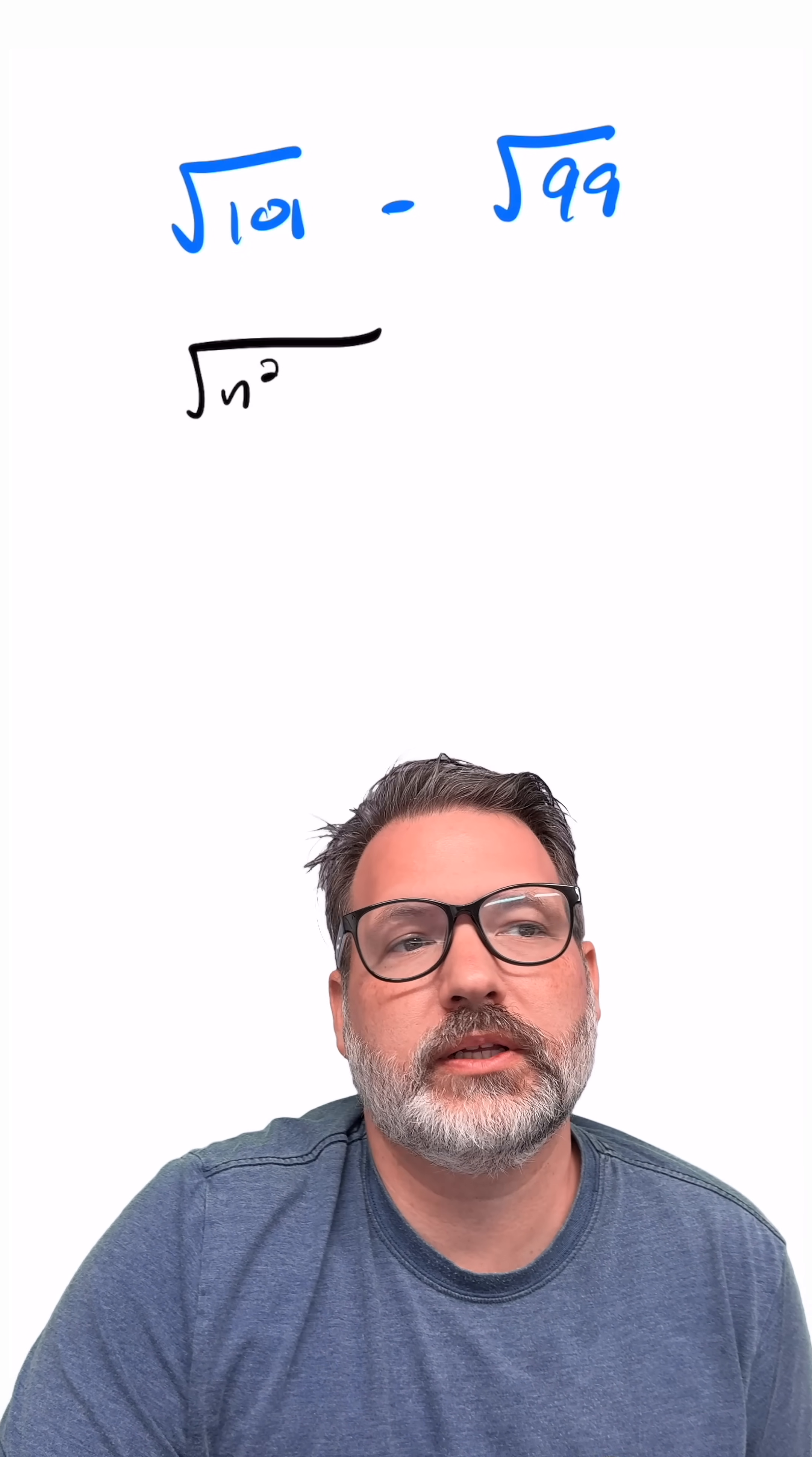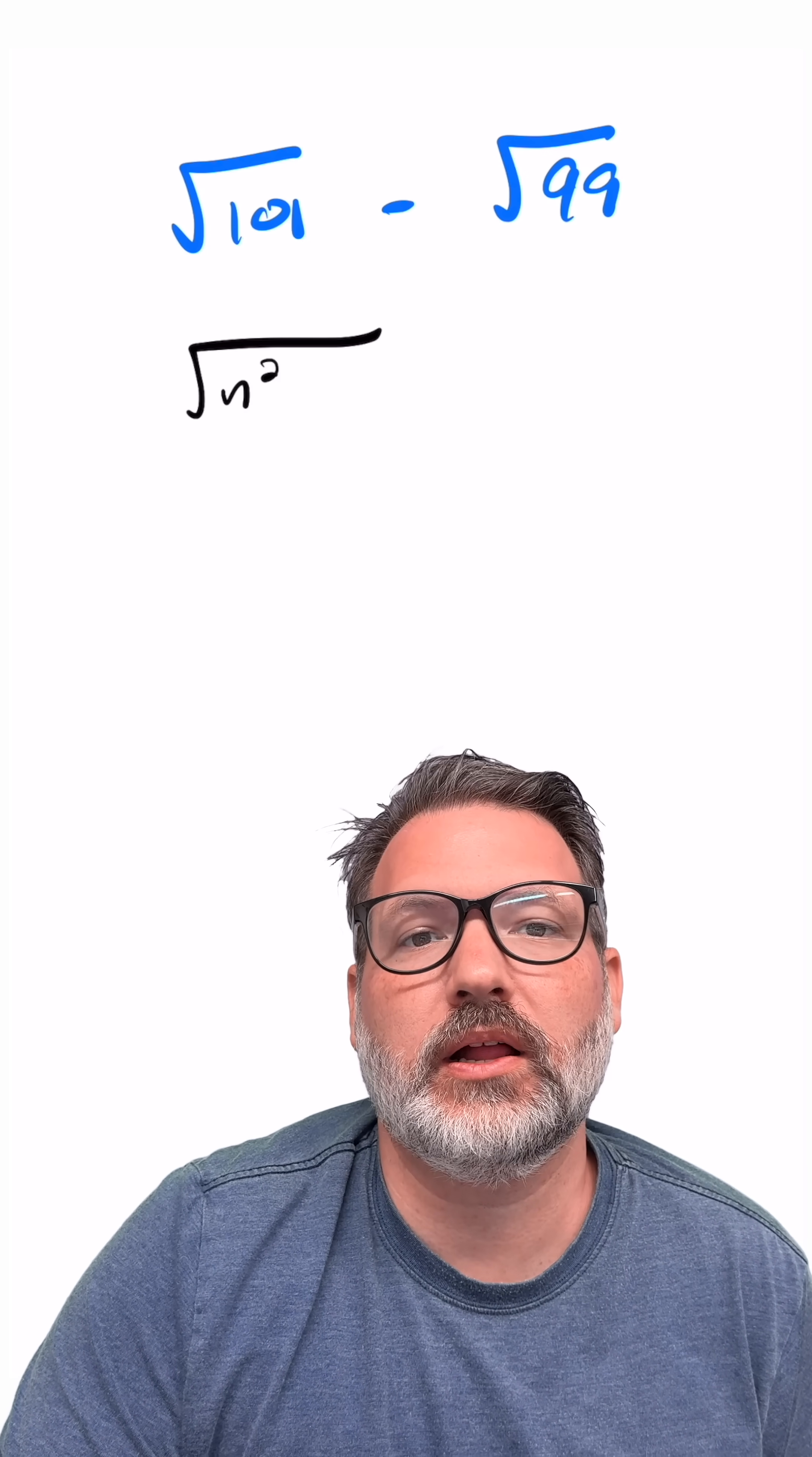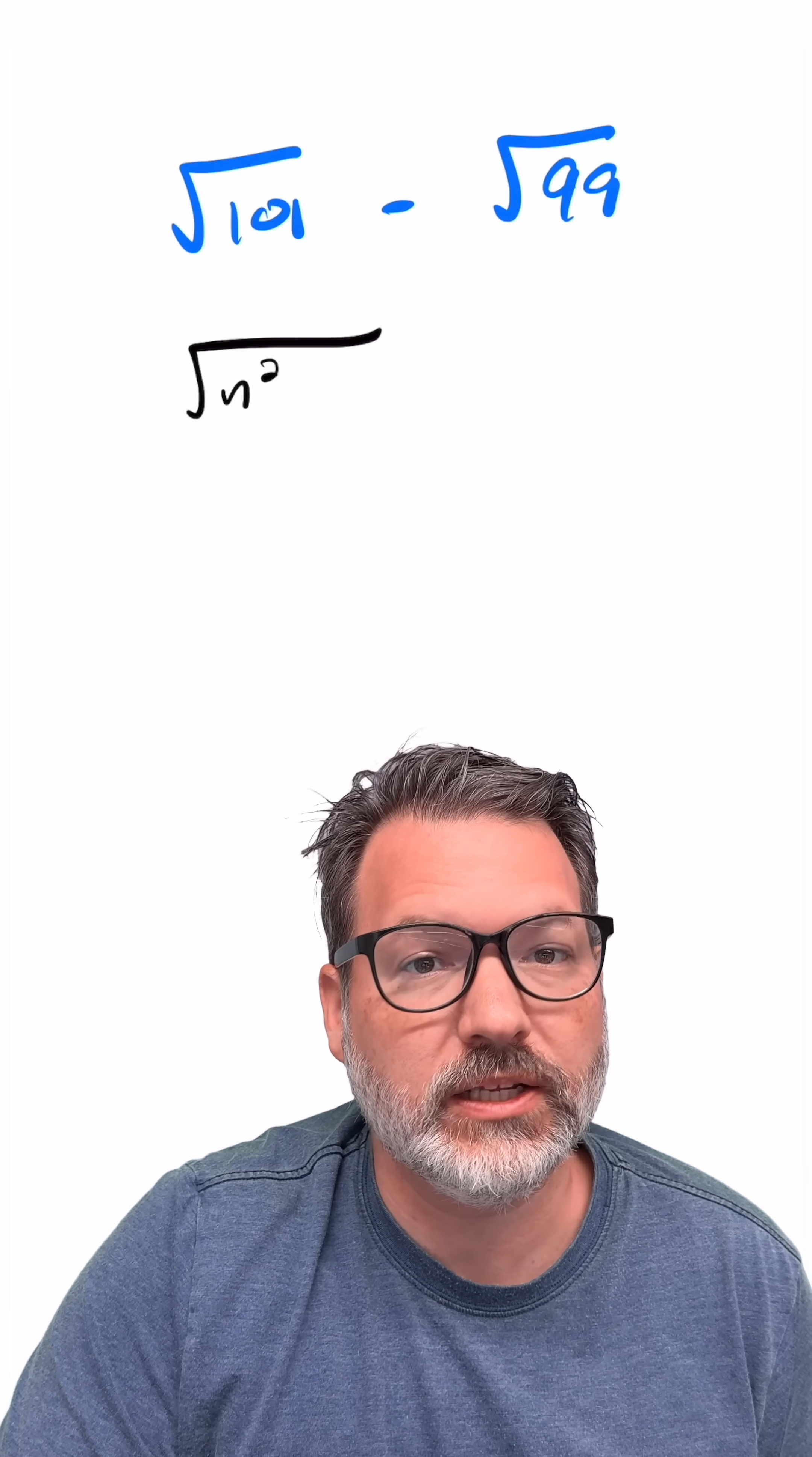If we have some perfect square, we're going to say we have the square of n that the things we're taking the square root of are close to. So in this case, we can tell 101 and 99 are both pretty close to the perfect square 100, which is, of course, 10 squared.